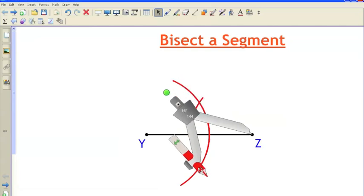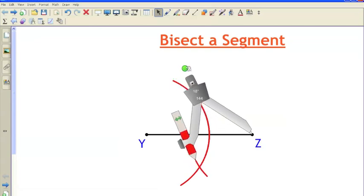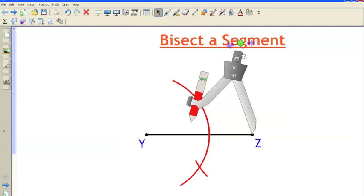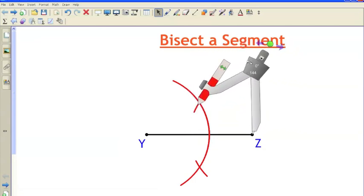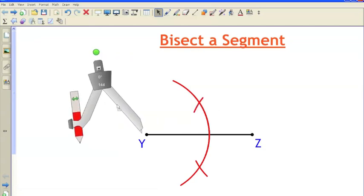But with less writing on the page, you'll see later on with more complex constructions that it kind of takes up lots of space. So I went ahead and I created those, and there are these two intersections that are created. Now I'm done with my compass.